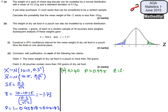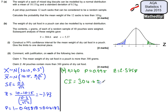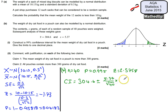Now I know the Z value is 2.5758. The confidence interval is centred on x-bar = 304.6, plus or minus Z times the standard error. The standard error is the standard deviation of 5.37 divided by the square root of n = 40, then multiplied by the Z value of 2.5758.